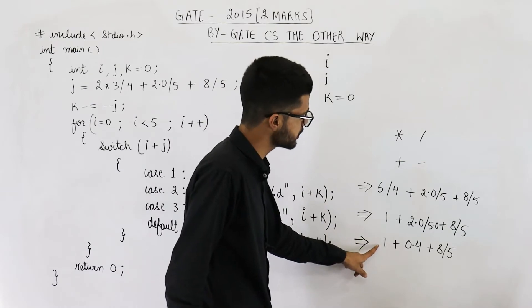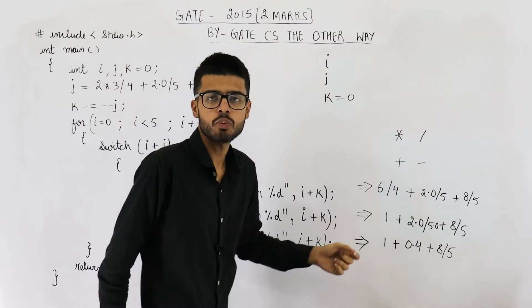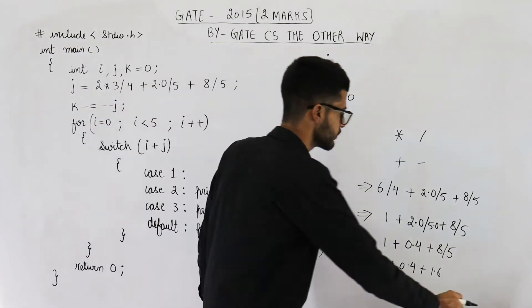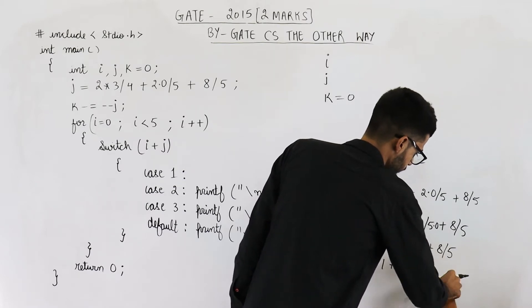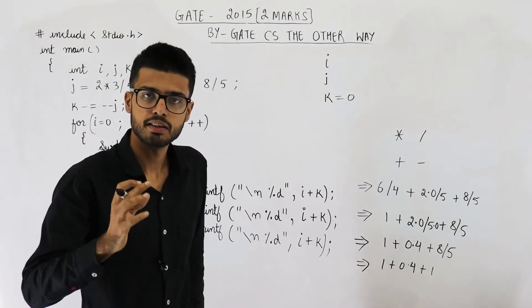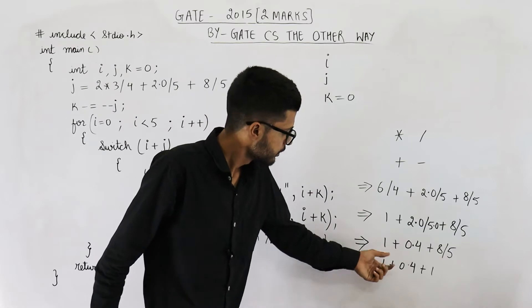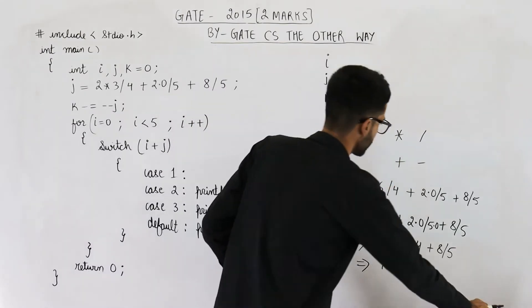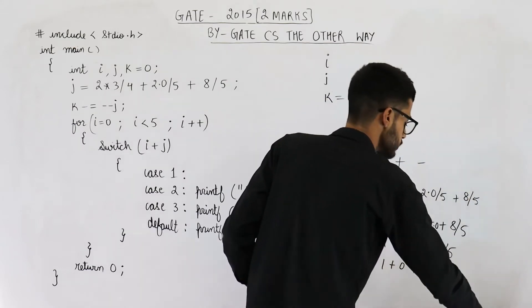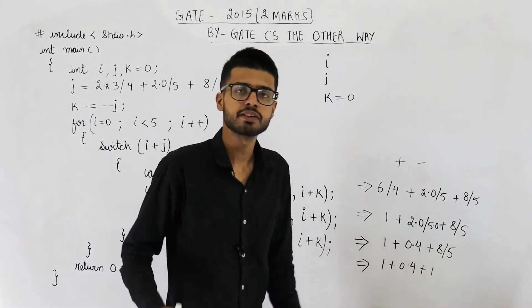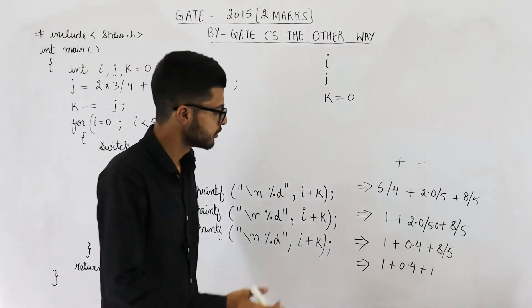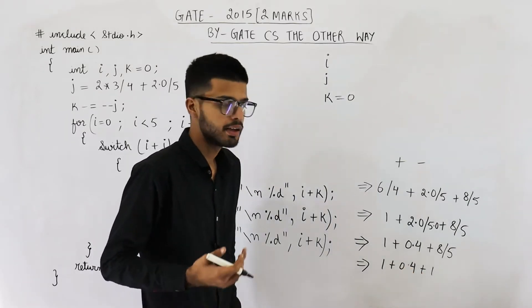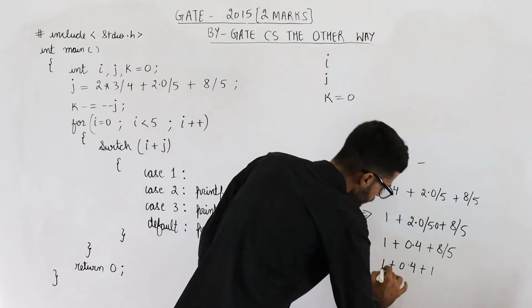Again, scan the expression from left to right. 8 divided by 5 is 1.6, but since both 8 and 5 are integers, we neglect the decimal part. Integers when divided give an integer only. We have now solved all multiply and divide. Then we solve the addition operators, whose associativity is also left to right. To add 1 and 0.4, we upgrade 1 to 1.0, giving a result of 2.4 — wait, it will be 1.4. Then adding the next value gives 2.4. So 2.4 is the final expression result.